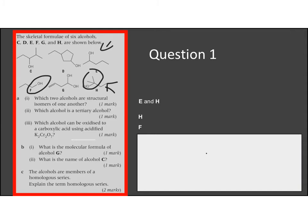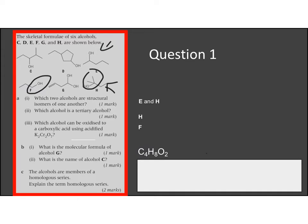So what is the molecular formula of G? Well, if you count up the atoms, you will end up C4H8O2. Don't forget, you do need to collate all the atoms together. So you can't have C4H7OOH or anything like that. They've all got to be together.